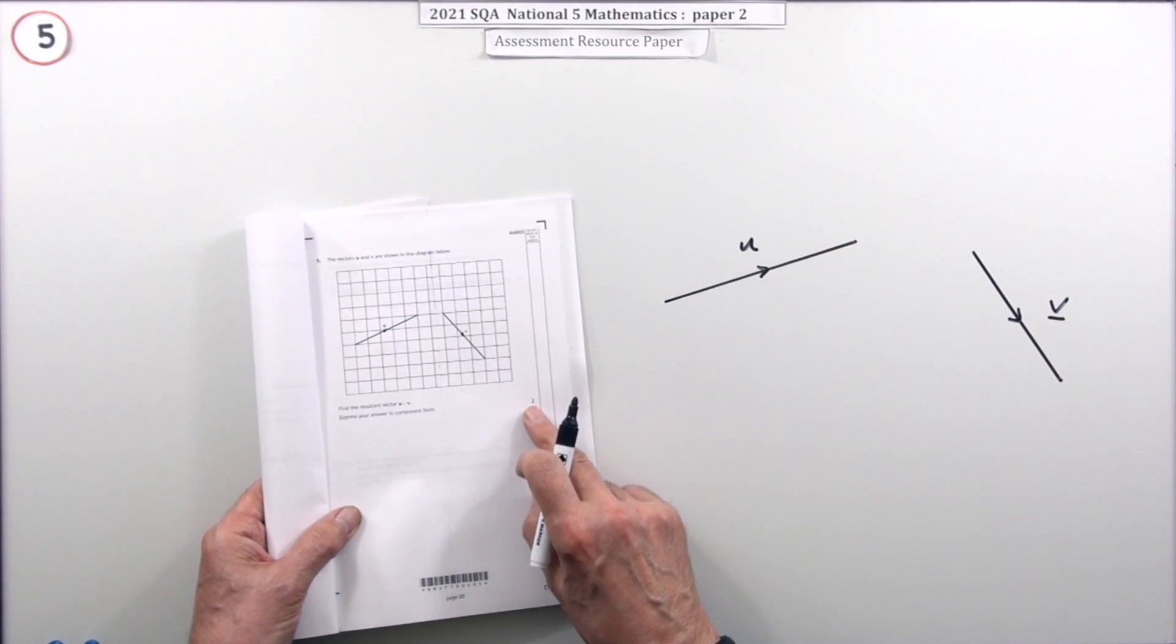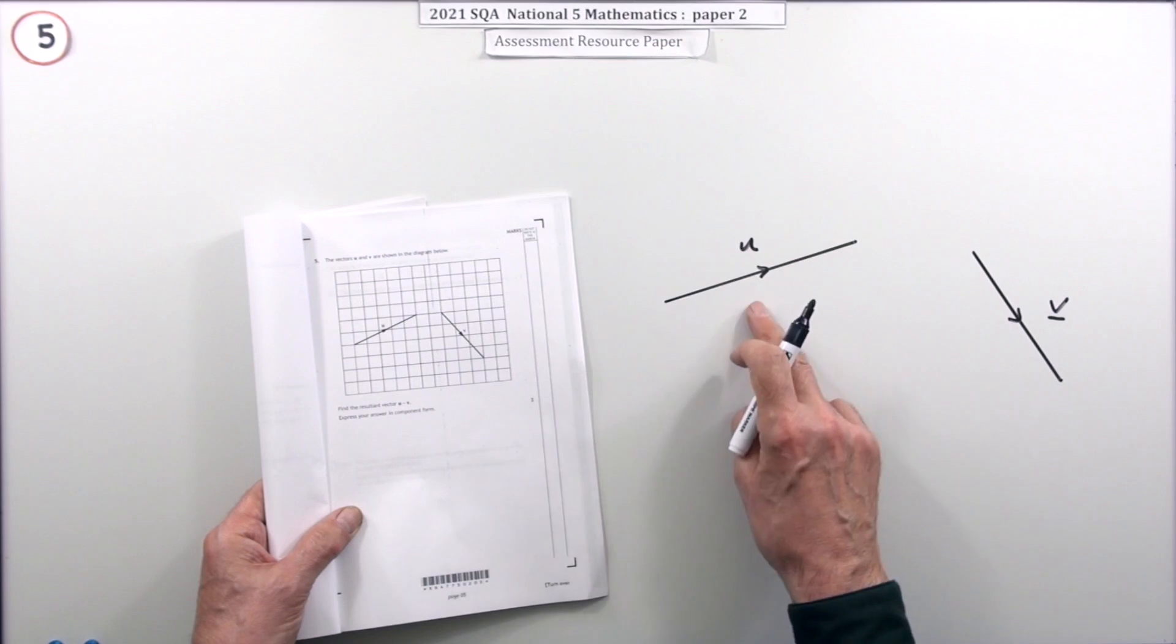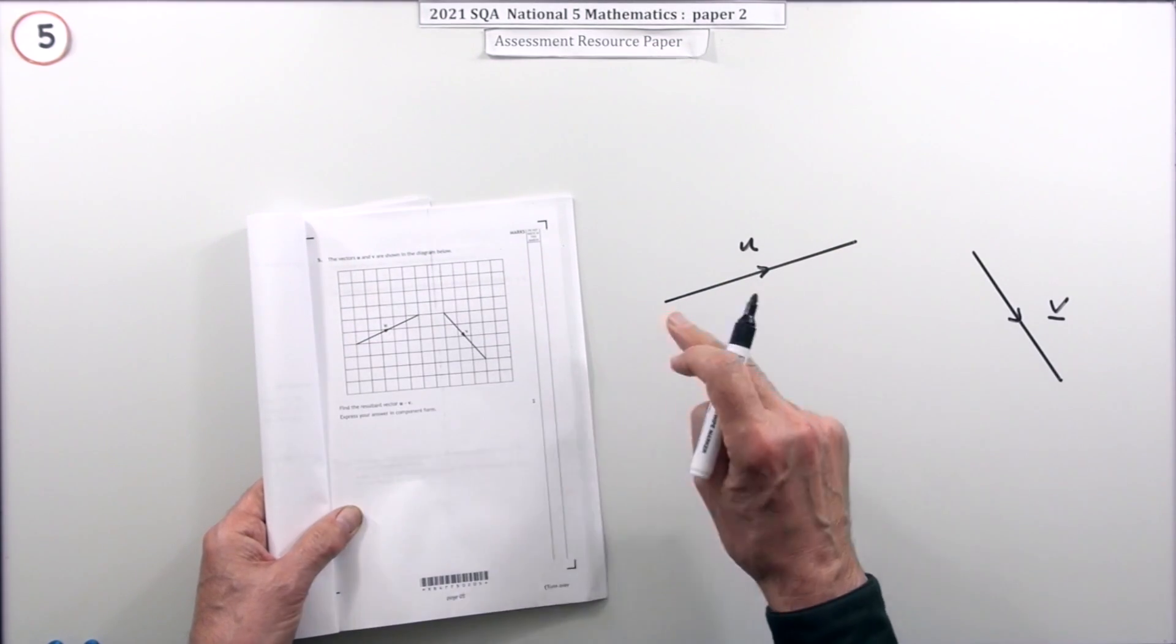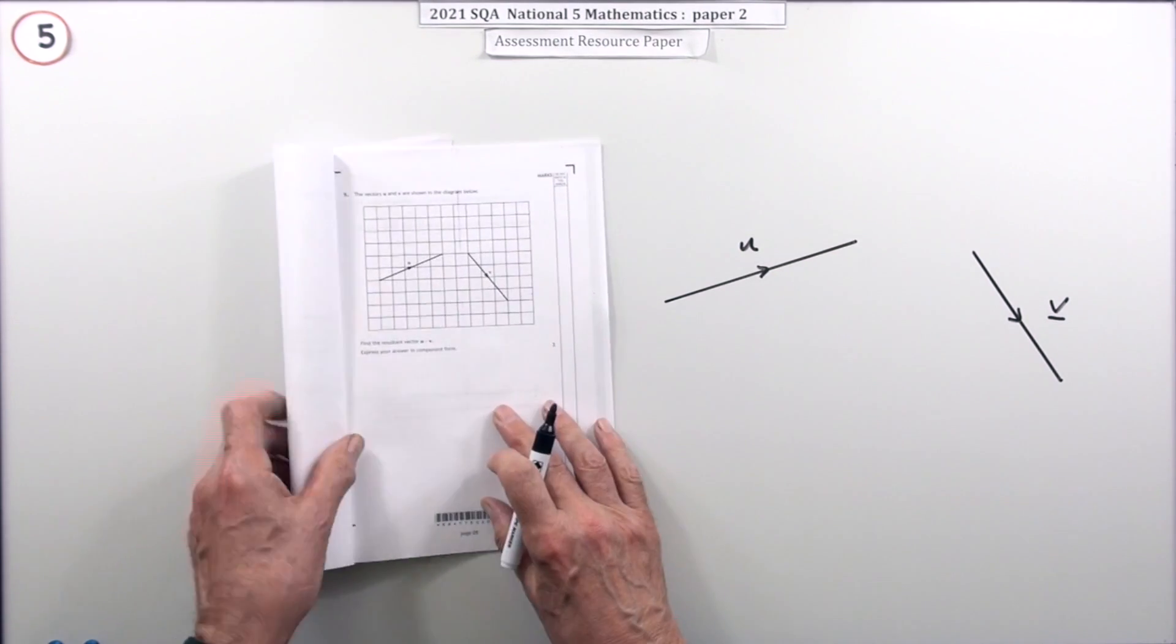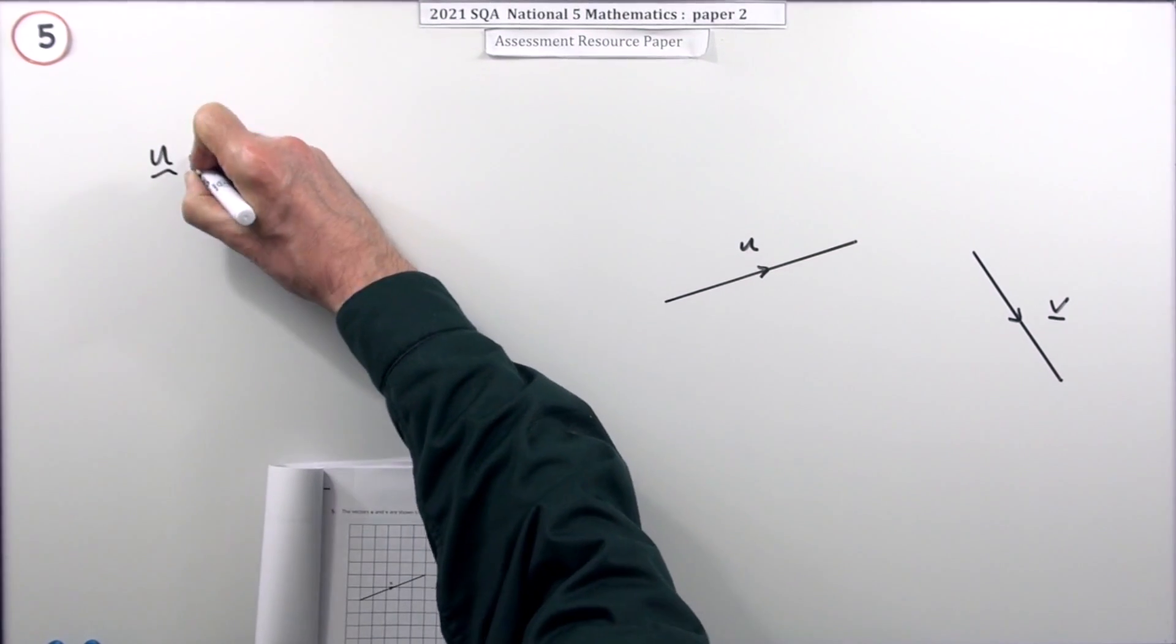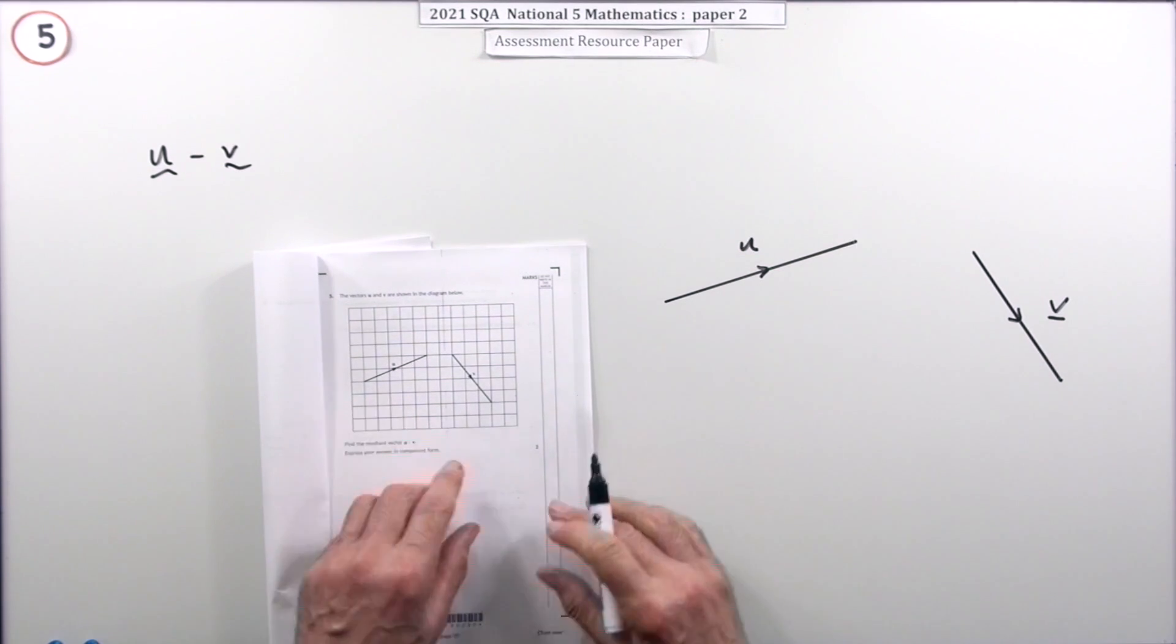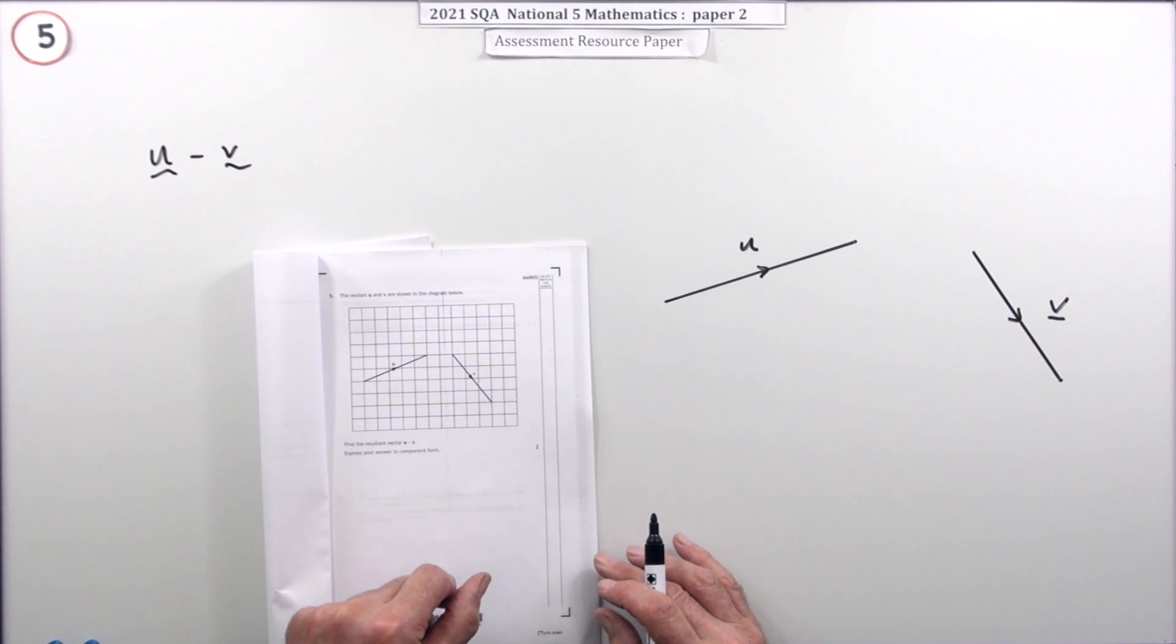So number five, well, just for two marks, you'll be subtracting vectors. Now I'm not showing the grid here in the background because it's not giving you the components of these. This is something you'll have to count for yourself. So what it does in the diagram, it shows two vectors here. And you have to find the resultant vector u minus v. And the way you're going to do that is, well, I suppose because you've got an answer sheet, you could just do it by drawing.